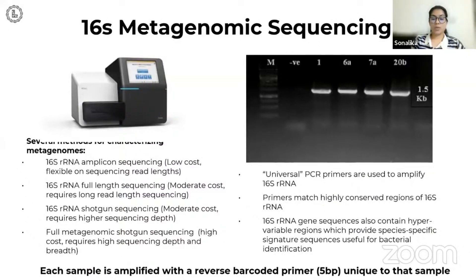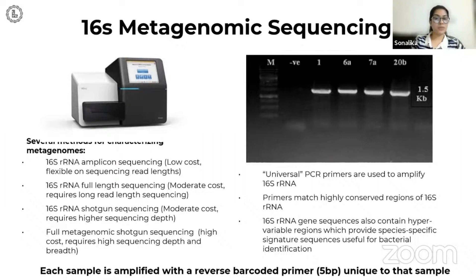Such metagenomic sequencing focuses on 16S or 18S ribosomal RNA that has to be amplified with PCR amplification. The 16S gene sequences contain hypervariable regions,